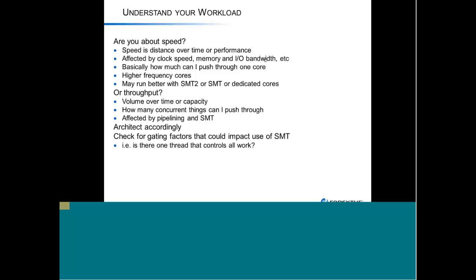For the bulk of you it's going to be an OLTP workload based around multiple things going through at a time. So if someone comes to you and says this is a 2.2 gigahertz system and we're going to a 4.4, you'll get twice the performance — they're absolutely wrong. This is because simultaneous multi-threading is based on some of the registers being duplicated, not all of them being duplicated. We'll talk a little more about that later.